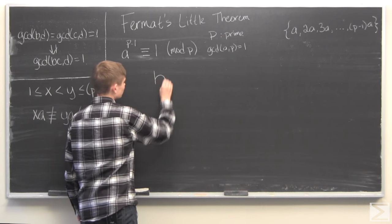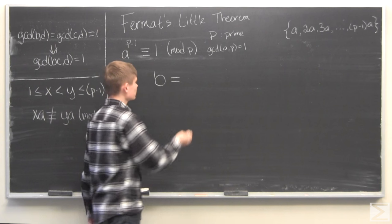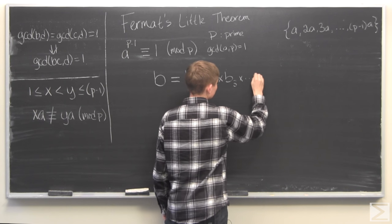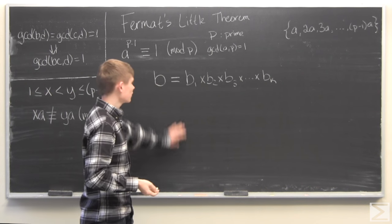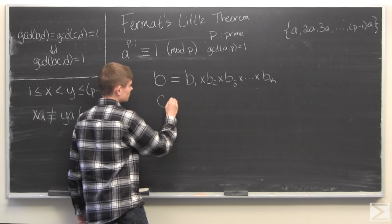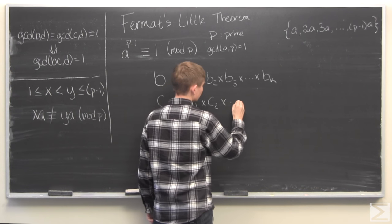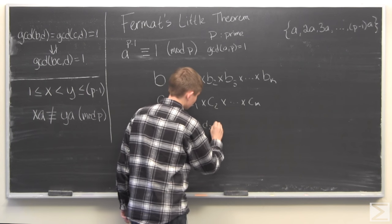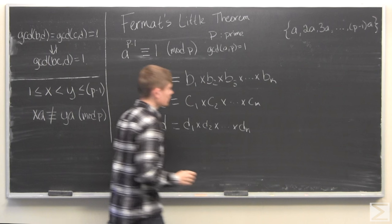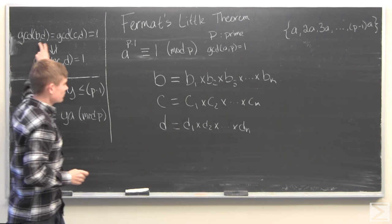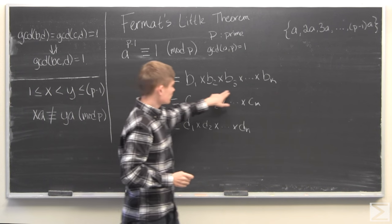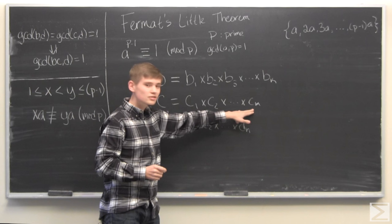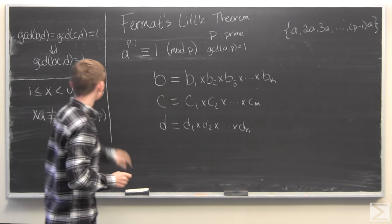This is a pretty easy one to prove. We can break b up into its prime factors, which we can write as b1 times b2 times b3, and so on up to bk, depending on how many prime factors it has. We can do the same thing for c and for d. Since b and d are relatively prime, none of b's prime factors equal any of d's prime factors.